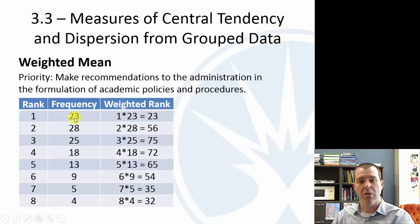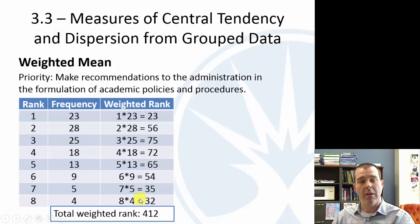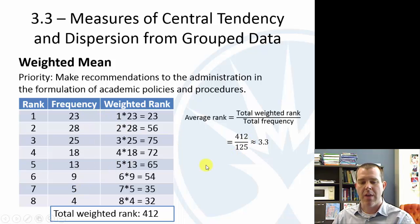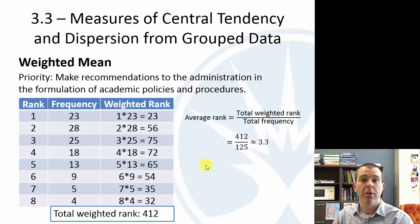It's very similar to grouped data: I weight each rank by multiplying it by its frequency — 1 times 23, 2 times 28, and so on — add all those weighted values up to get a total of 412, then divide by the total of 125 respondents. The average rank was about 3.3 for that priority — very similar idea to computing a mean from grouped data, but slightly different.